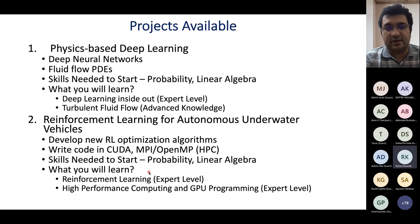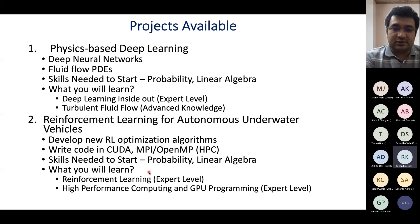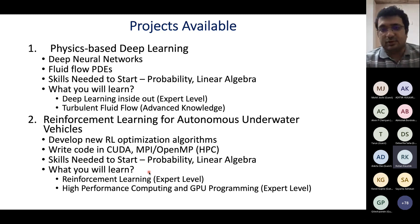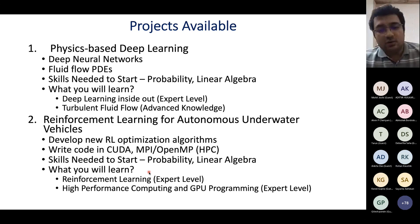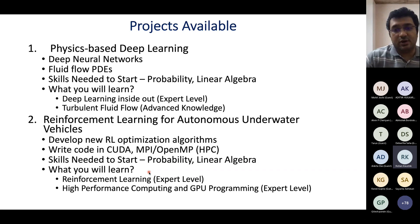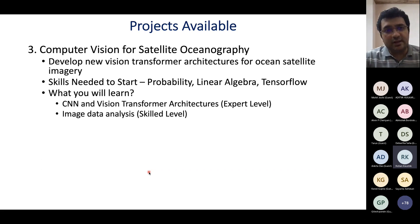The second project is reinforcement learning for autonomous underwater vehicles, where we develop new reinforcement learning optimization algorithms. At the end of the project, you will be writing code in CUDA, MPI, and OpenMP. Skills needed to start: probability, linear algebra, and programming. By the end of your PhD you'll be an expert in reinforcement learning and in high performance computing and GPU programming.